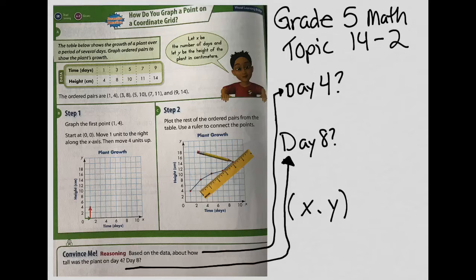Grade 5 math topic 14 lesson 2. For more resources and additional support log on to classlink and go to envision to topic 14 lesson 2. In today's lesson we're picking up from topic 14 lesson 1 where we learned how to plot points on a coordinate grid. Today we're gonna look at the ordered pairs, plot them, and answer some questions.